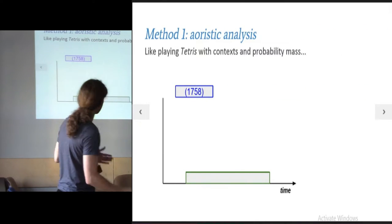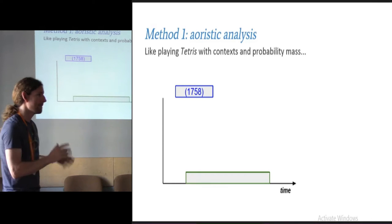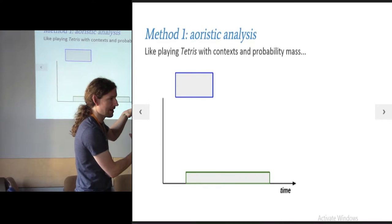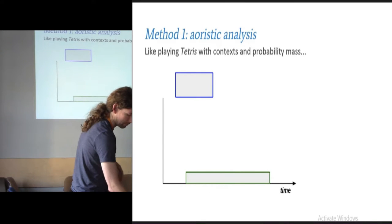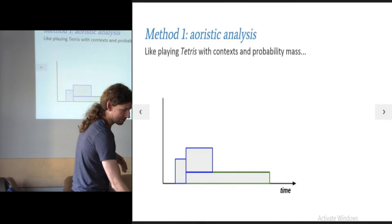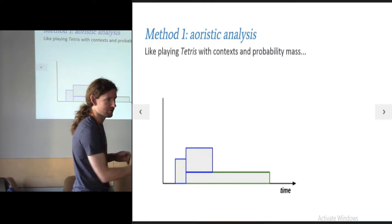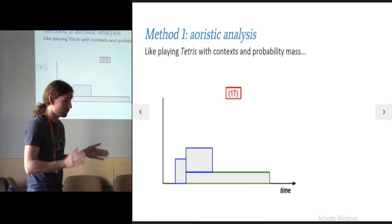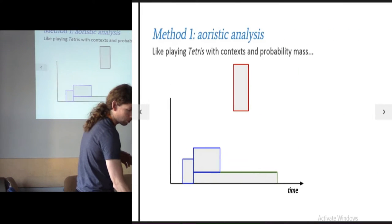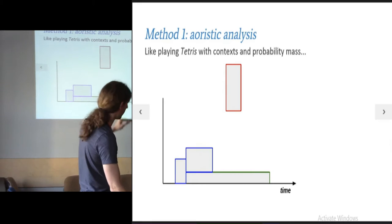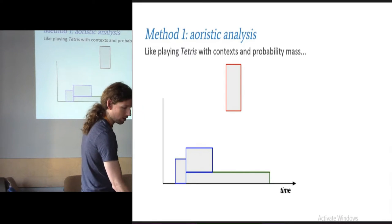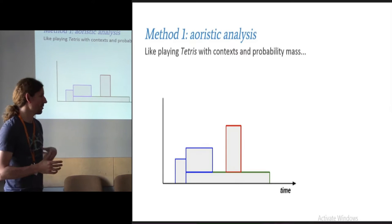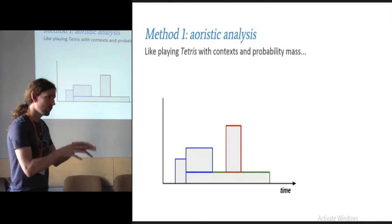Then you've got another context, and this one's a bit better dated. It's only half the date range, but it still has a probability of one, so you have to double it up. You have to keep the area the same, expanding it up. And then you drop it down, and this is where the Tetris comes in. This would work much better if it was sideways. Then you have another context which is really well dated, and that ends up contributing a lot more in terms of your probability mass on the y-axis. You do this with all of the contexts in your study, all of the phases, all of the sites, whatever it might be. You pile them all up together.